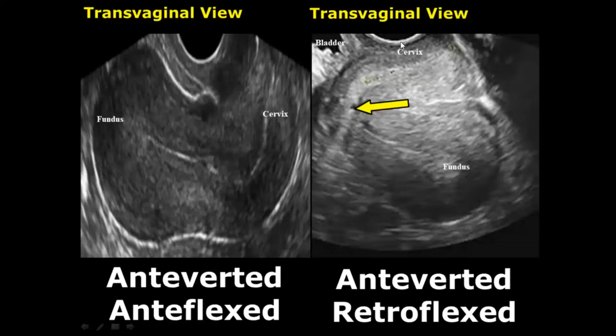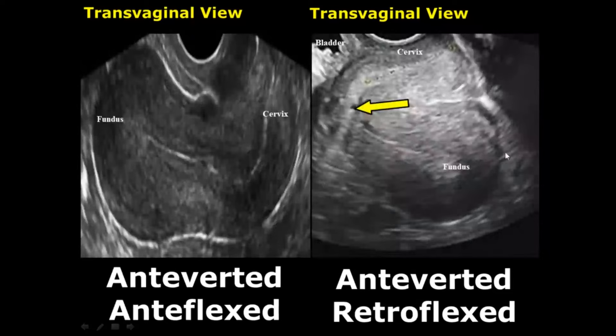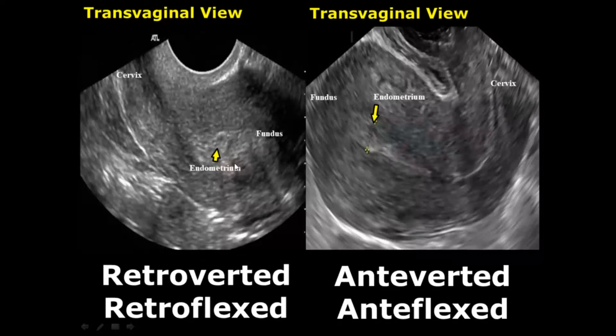Here we have the anteverted and retroflexed uterus. The cervix is again facing anteriorly, upward. The body of the uterus is bending away from the bladder, posteriorly. The bladder is in the top left corner of the image and the uterus is bending away. Another feature is that in retroflexed uterus, the fundus or body will appear on the right side of the image.